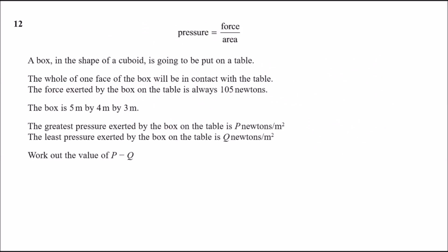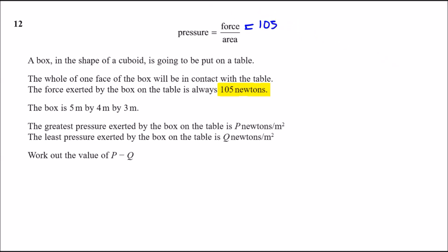Question 12: pressure equals force divided by area. A cuboid box with dimensions 5 × 4 × 3 is placed on a table with the force exerted always being 105 Newtons. We need to find the greatest pressure p and least pressure q, then calculate p − q.